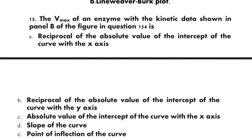Question 15: The Vmax of an enzyme with kinetic data shown in the Lineweaver-Burk plot from Question 14 is: A) the reciprocal of the absolute value of the intercept of the curve with the x-axis, B) the reciprocal of the absolute value of the intercept of the curve with the y-axis, C) the absolute value of the intercept with the x-axis, D) the slope of the curve, E) the point of inflection of the curve. The correct option is B.